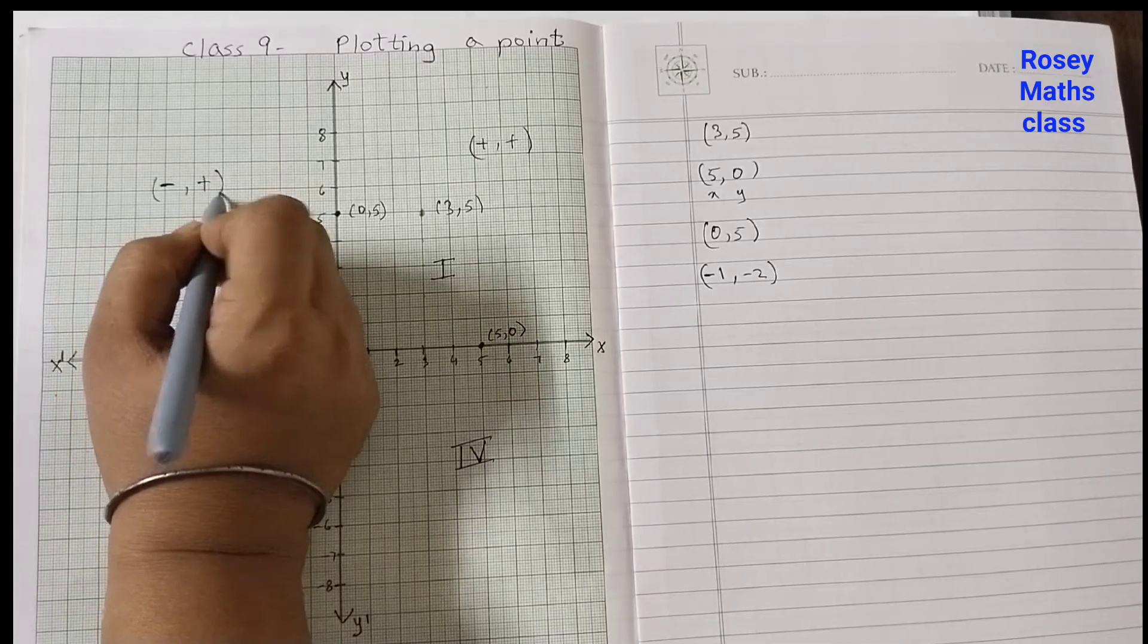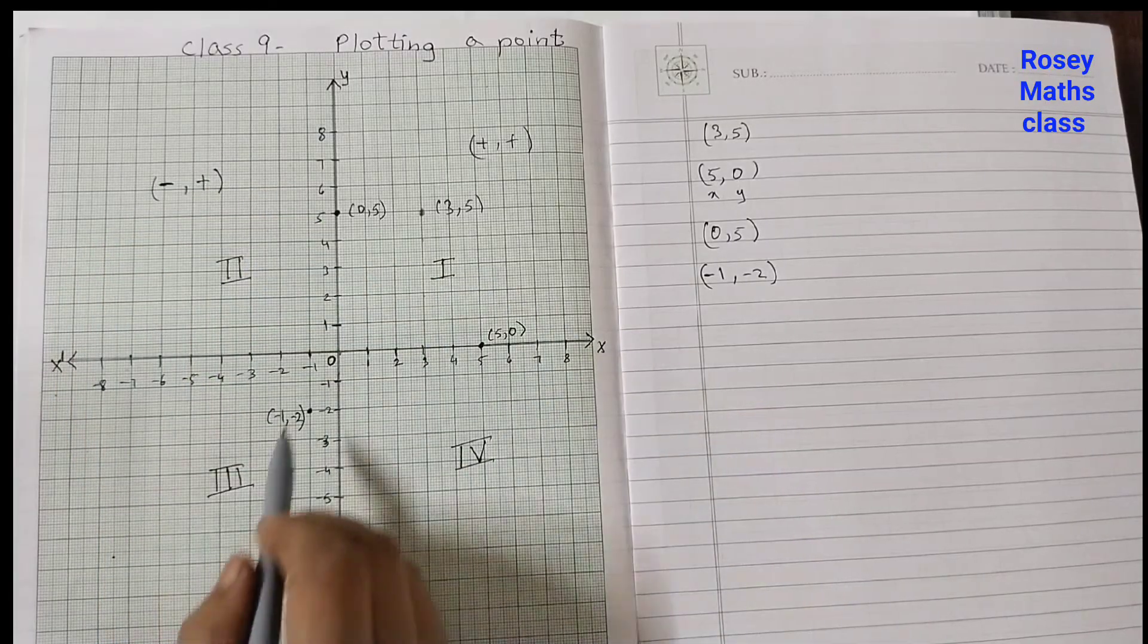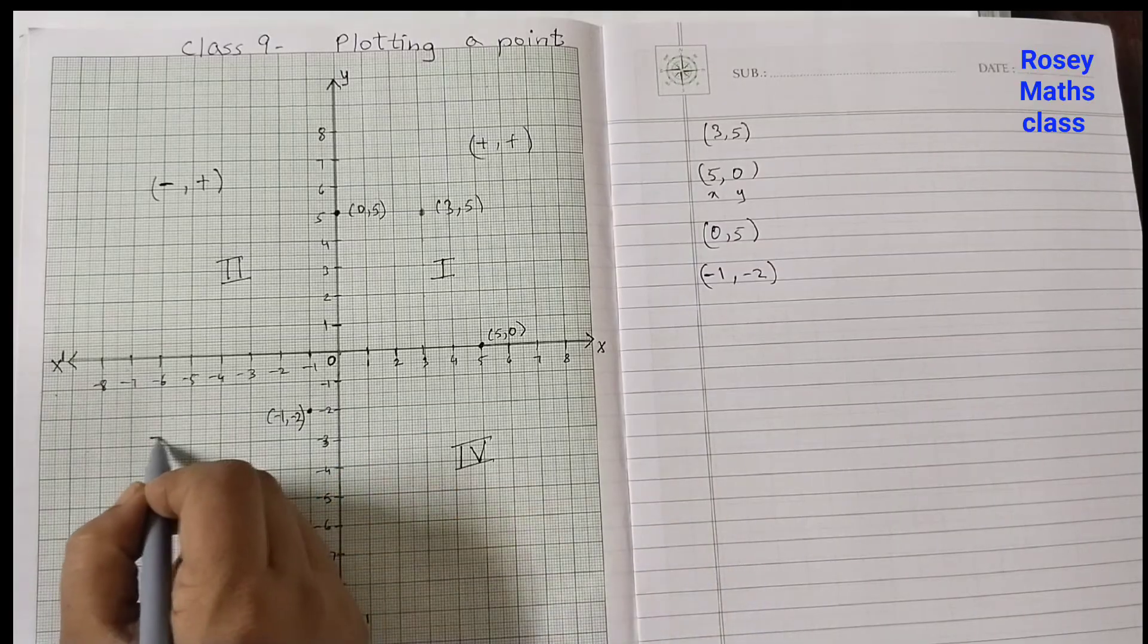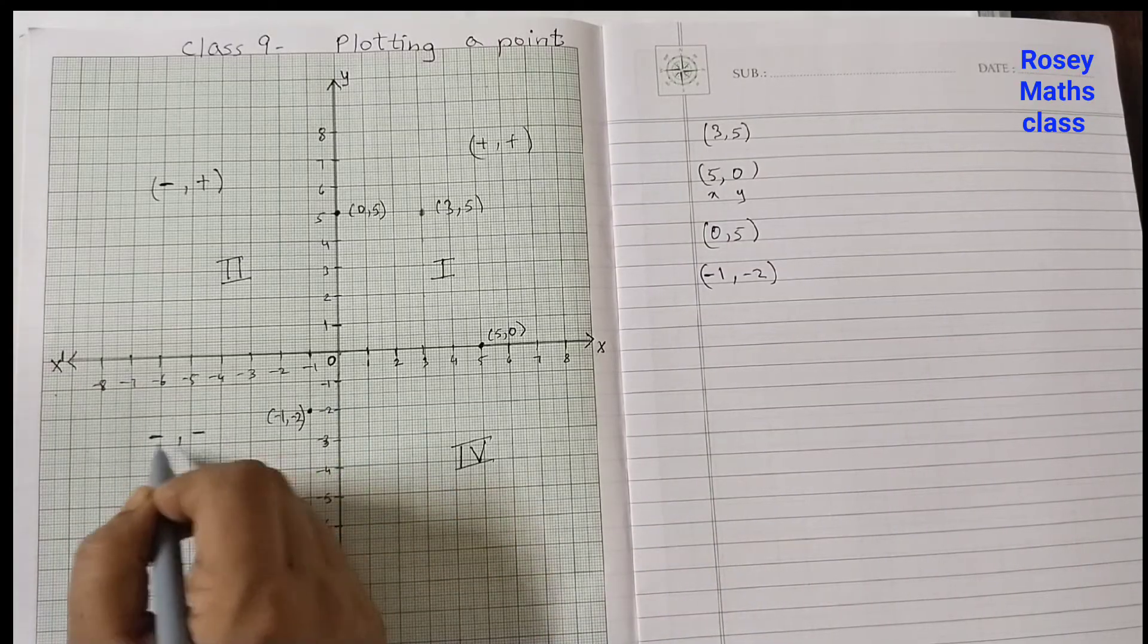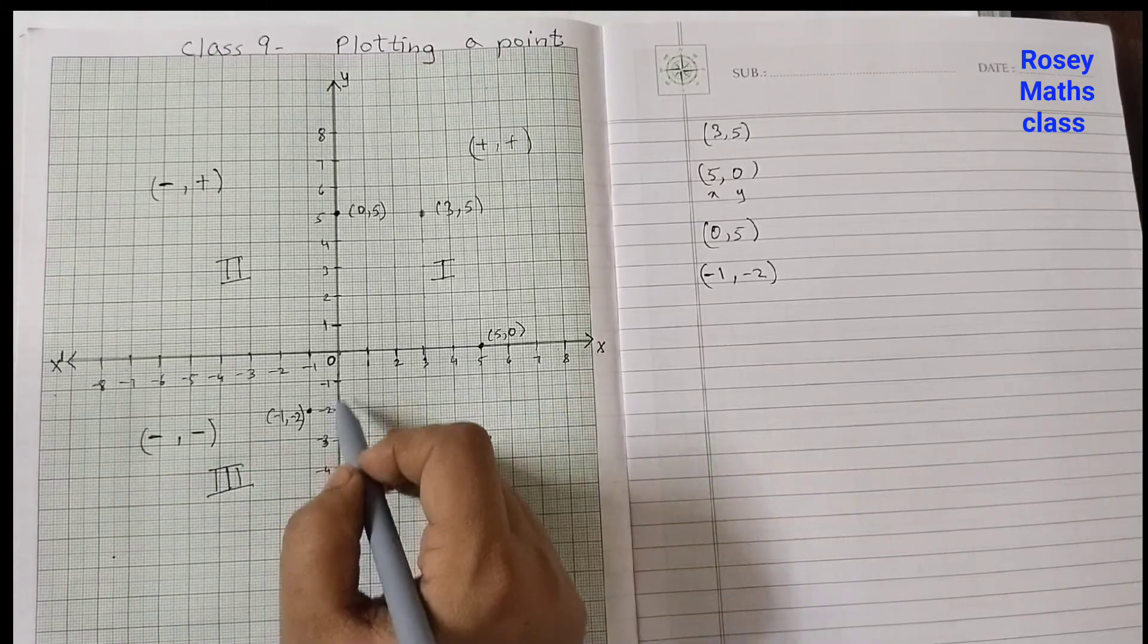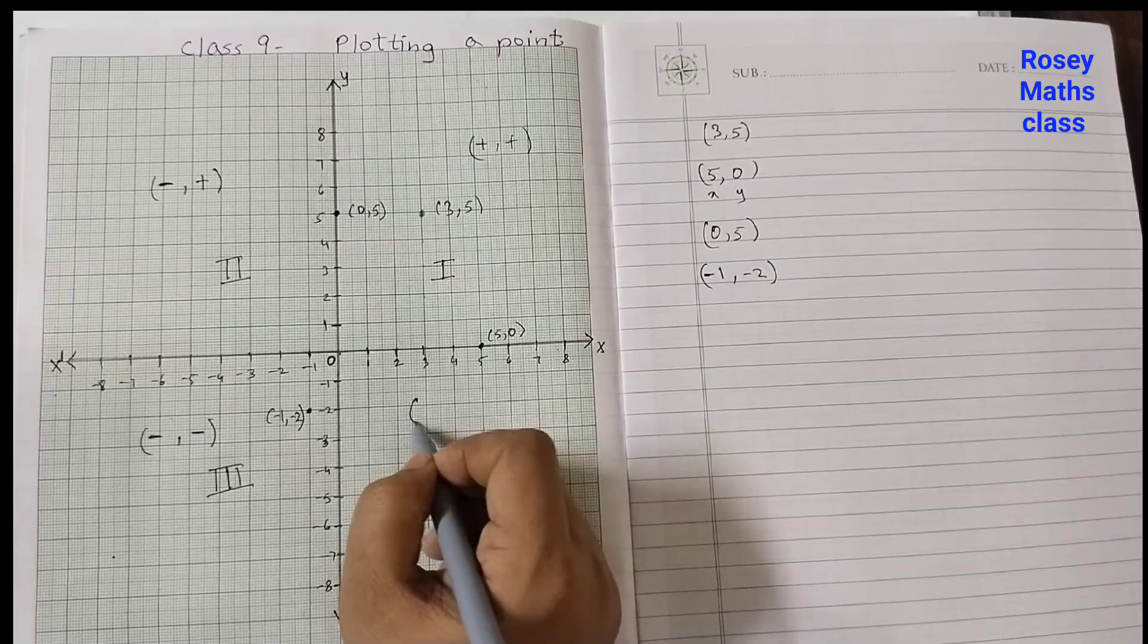Third quadrant: all minus sign here, also all minus sign. So x is also minus and y is also minus. And the fourth quadrant: positive, negative.